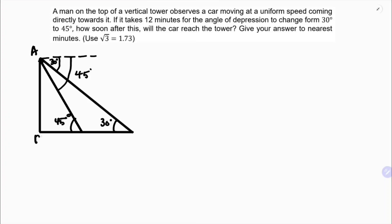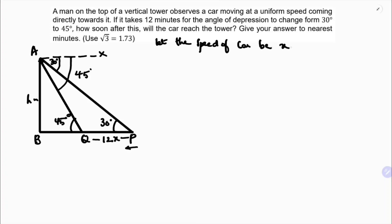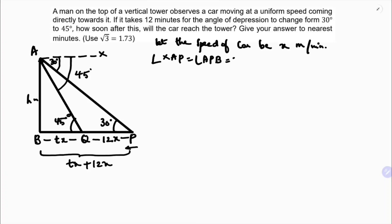A-B is the height of the tower, h meters. I'll take two points P and Q. From P to Q the car is approaching, and it takes 12 minutes. Let the speed of the car be x meters per minute. B-Q I'll take as t-x, because distance equals speed into time. So the total distance B-P will be t-x plus 12x. The angle A-P-B equals 30 degrees.